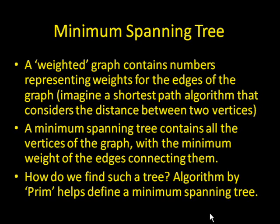Okay. Now, another topic is a minimum spanning tree. A weighted graph, if a graph is weighted, that means that it contains numbers that represent weights for the edges of the graph. A logical application of this, you can imagine a shortest path algorithm that also considers the distance between two vertices, as opposed to the number of vertices in between. A minimum spanning tree contains all the vertices of the graph, with the minimum weight of the edges connecting them.